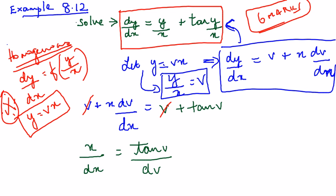And you know that this is not the way to write it. So I'm just going to inverse everything. So dx by x equals dv by tan v.